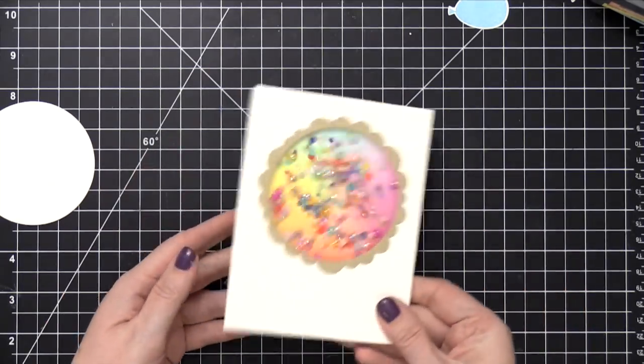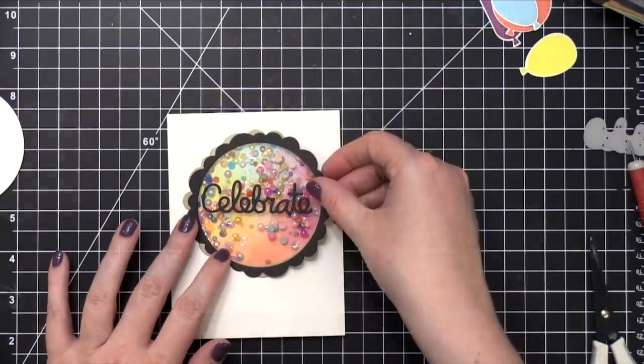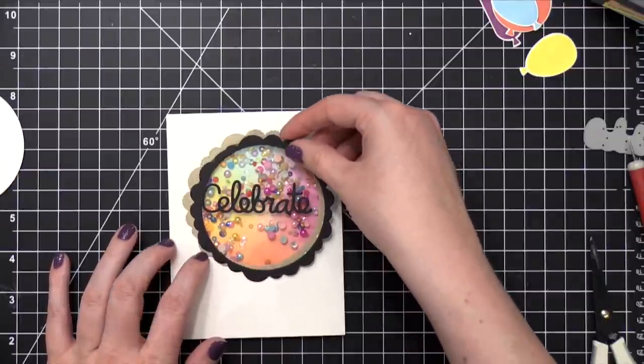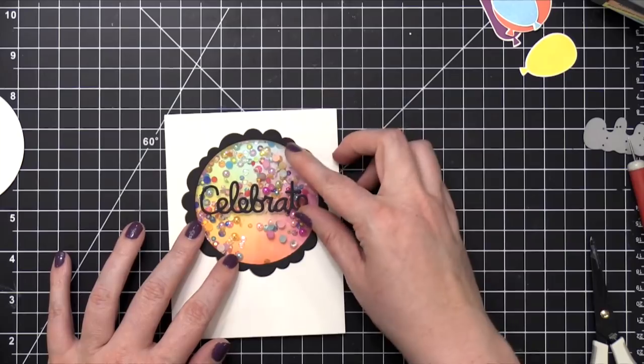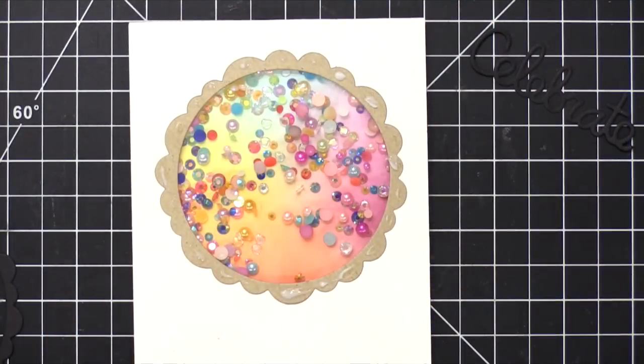I'm gonna flip this over. You can see all those little half pearls and gems are inside that area. At this point, I decided I wanted to switch up the cardstock that I'm using. So I've cut that die cut out of some black cardstock, and then I just glued it on top of the craft colored cardstock that I had in there earlier.